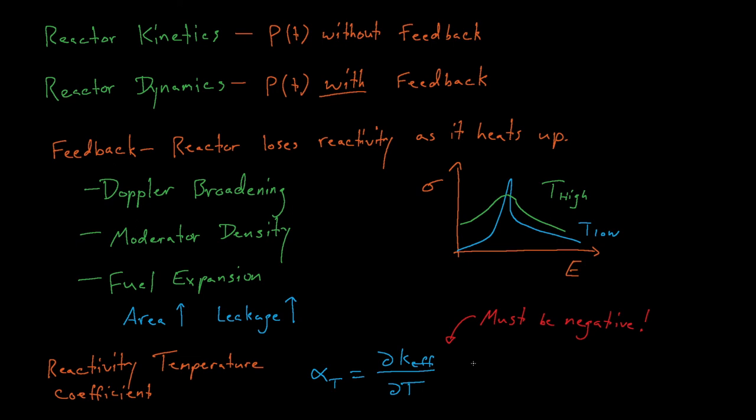But in reality, having coefficients that are too negative can be bad too. Very large negative reactivity coefficients can result in some dangerously large power oscillations throughout the core.